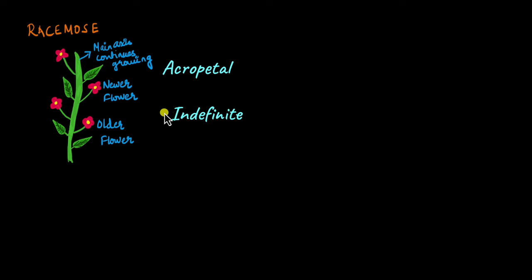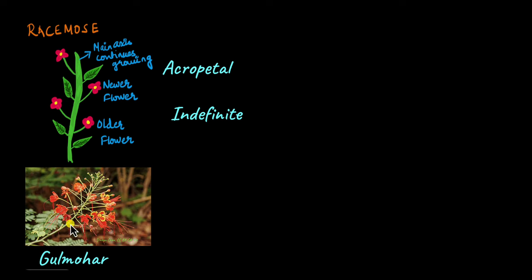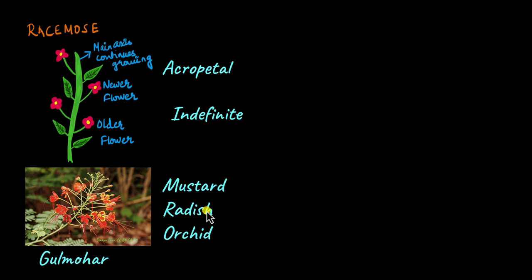Racymose inflorescence is also called the indefinite type of inflorescence. Examples of flowers that display racymose inflorescence include gulmoher — here you can see the main axis that can continue to grow and the flowers are added to the sides laterally. The lowermost flower is the older flower and newer flowers are added to the sides as the main axis keeps growing. Other examples include mustard, radish, and orchid — and we saw mustard and orchid flowers earlier in the video. Those flowers also display racymose type of inflorescence.